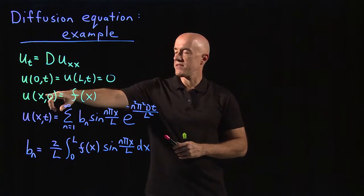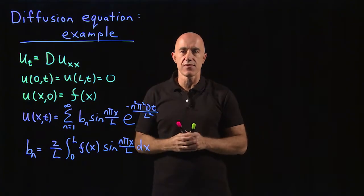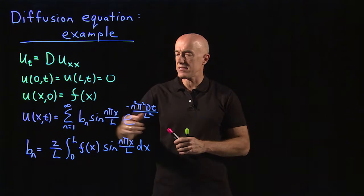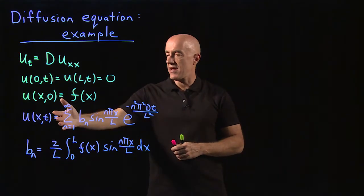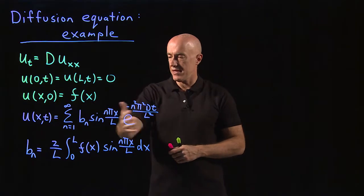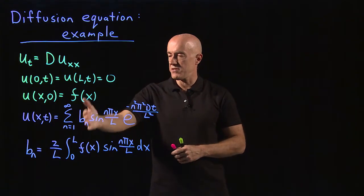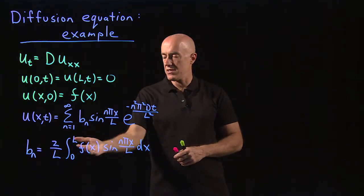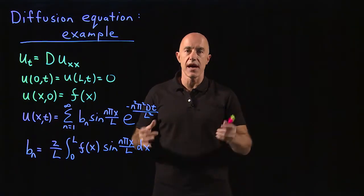We also specify some initial condition of the dye in the pipe. Here it was quite general f of x. And our solution then was this series for u of xt with these coefficients b sub n. And the coefficients are given in terms of this initial concentration of the dye.